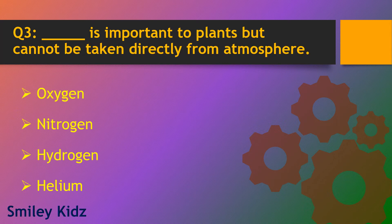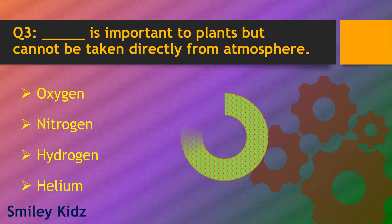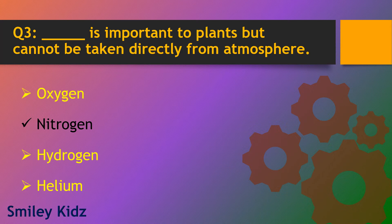Question number 3. Dash is important to plants but cannot be taken directly from atmosphere. Options are oxygen, nitrogen, hydrogen and helium. The right answer is nitrogen. Nitrogen is important to plants but cannot be taken directly from atmosphere.